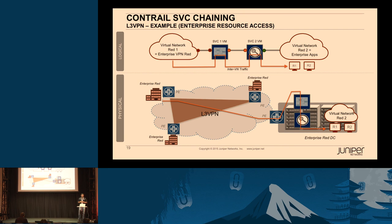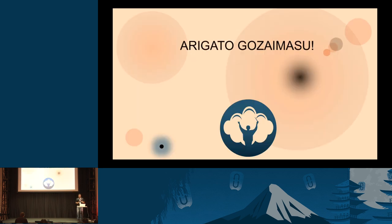Here's another example: an enterprise with different branch locations also has their own data center running an intranet web application. Traffic trying to access the web portal is sent through a load balancer and a firewall. That's essentially all I wanted to cover. I'll now hand the baton to my friends from IBM. Using IBM's Cloud Orchestrator, they'll show you how to deploy these network function service chains. I'd like to invite Stefan.